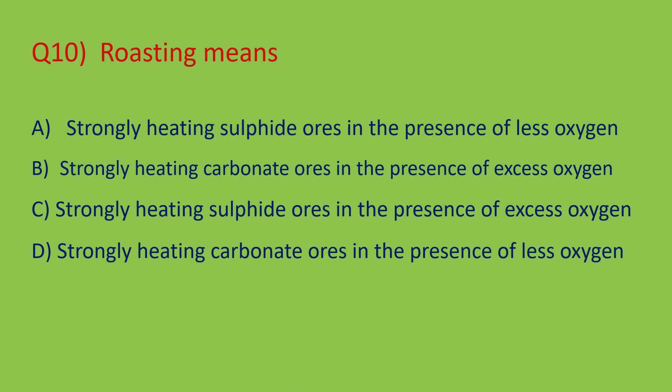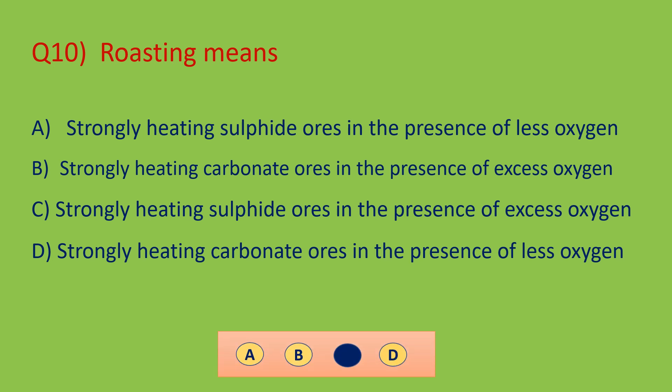Question number ten: what does roasting mean? Roasting is related to sulphide ores. When we heat a sulphide ore in the presence of excess oxygen, that process is called roasting. So out of the four options, option C is the right answer — strongly heating the sulphide ore in the presence of excess oxygen.